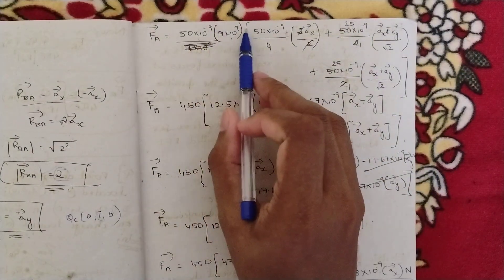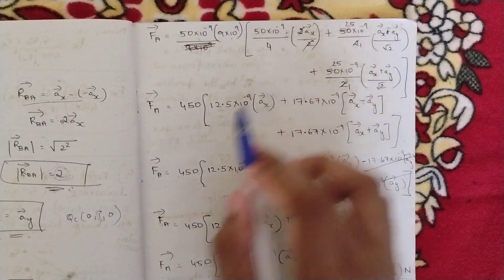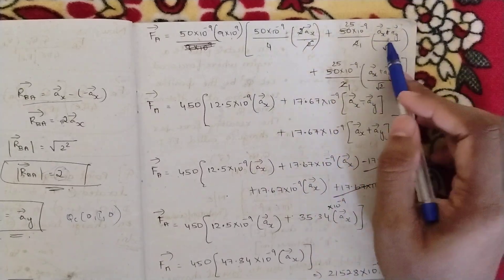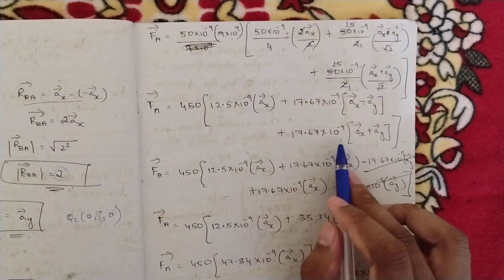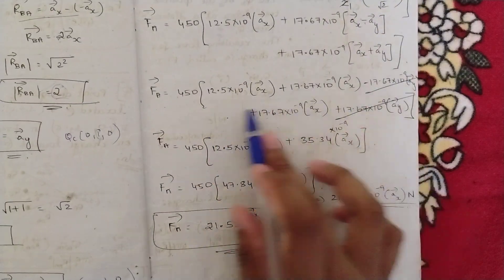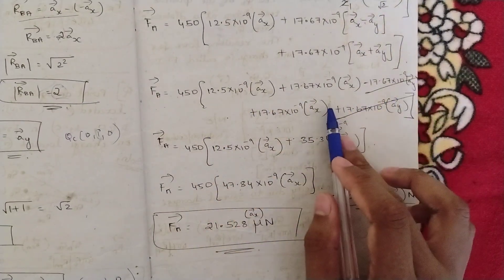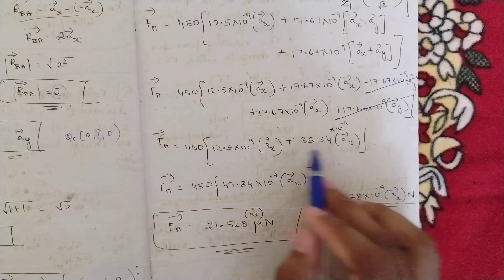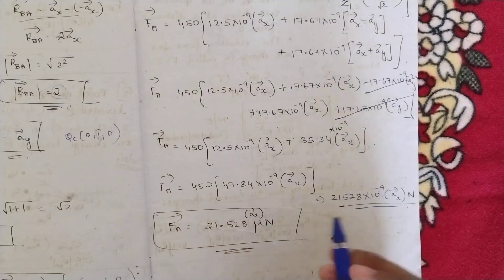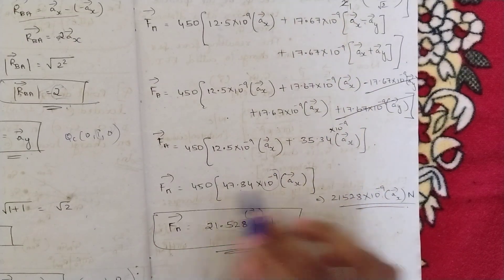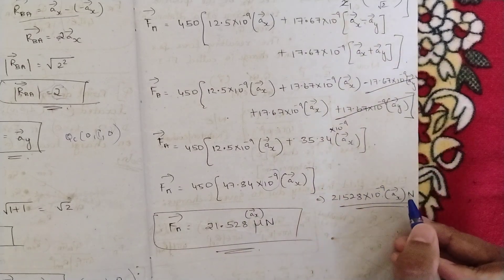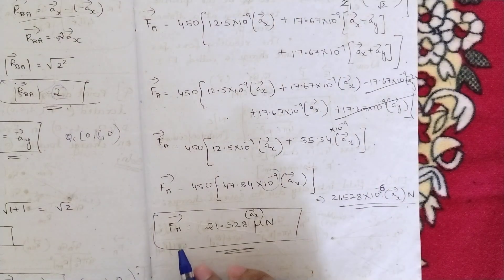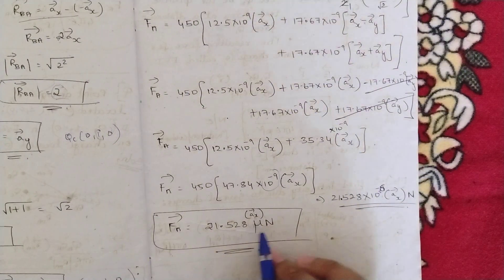Simplifying: 10⁻⁹ and 10⁹ cancel. 50×9 = 450, and 50/4 = 12.5, giving 12.5×10⁻⁹ ax. Then 25/√2 = 17.67×10⁻⁹, giving 17.67×10⁻⁹ (ax − ay) and 17.67×10⁻⁹ (ax + ay). The ay components cancel each other. Adding all ax terms: 12.5 + 17.67 + 17.67 = approximately 21528×10⁻⁹ ax newtons, which equals 21.528 μN in the ax direction. The final answer is F = 21.528 âx micro-newtons.